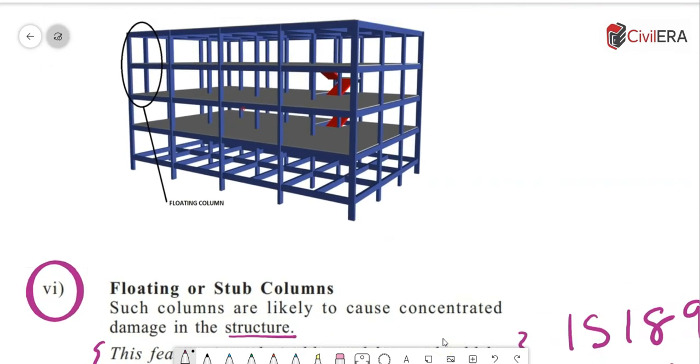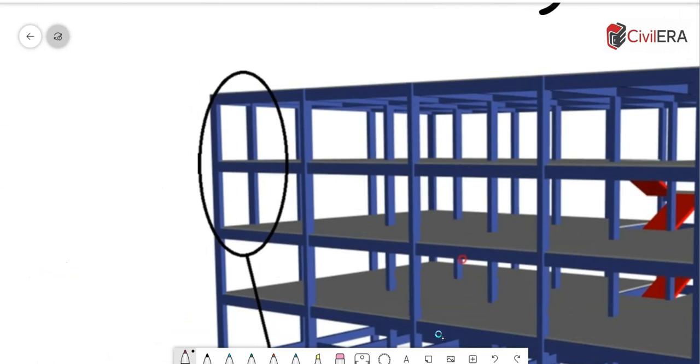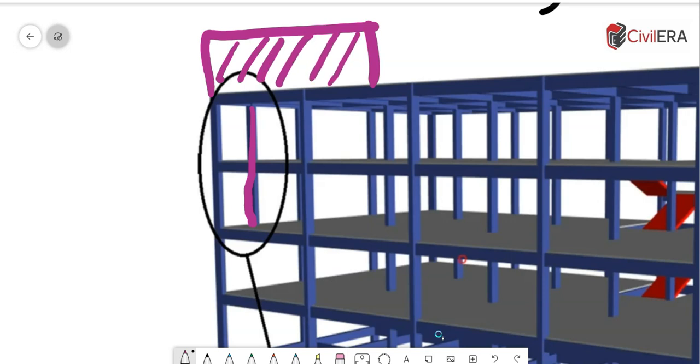Now, in case if you had one more floor above this and if you have an RC wall or anything - for whatever reason if you have any structure which is supported on that particular column - even that cannot be part of the lateral resisting system.